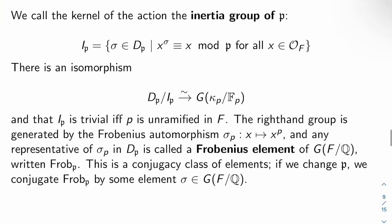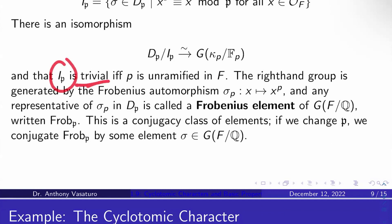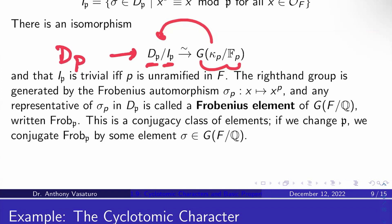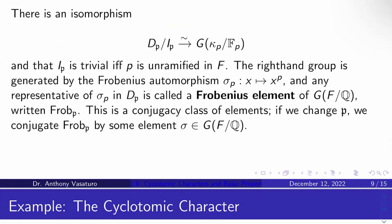The kernel of this action is the inertia group I_𝔭 — the set of all sigma in D_𝔭 that act residually trivially, meaning sigma(x) ≡ x mod 𝔭 for all x in O_F. There is an isomorphism from D_𝔭 mod I_𝔭 to Gal(kappa_𝔭 / F_P). Inertia is trivial if and only if P is unramified in F. The right-hand group is generated by the Frobenius automorphism sigma_P — the Pth power Frobenius. Pulling this back gives a Frobenius element Frob_𝔭 in the Galois group of F over Q.